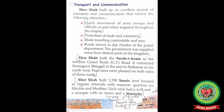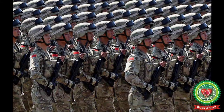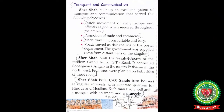Through proper postal services, messages and news could be sent from different parts of the kingdom. Reading from the textbook: Sher Shah built an excellent system of transport and communication that served the following objectives — quick movement of army troops and officials throughout the empire, promotion of trade and commerce, comfortable and easy travel, and supply of news from distant parts of the kingdom.